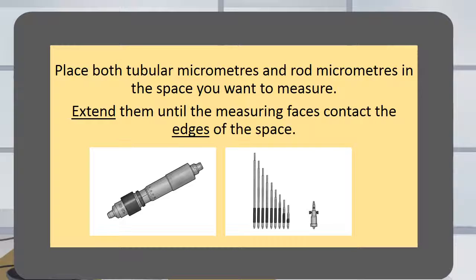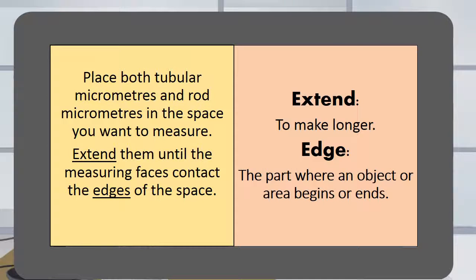Place both tubular micrometers and rod micrometers in the space you want to measure. Extend them until the measuring faces contact the edges of the space. Extend is to make longer. Edge is the part where an object or area begins or ends.